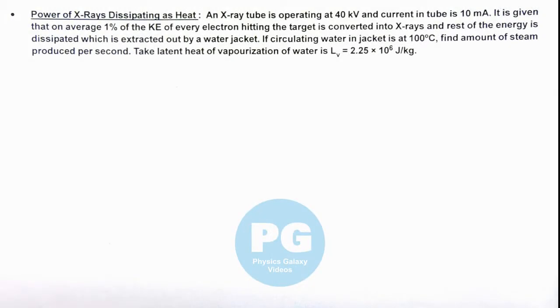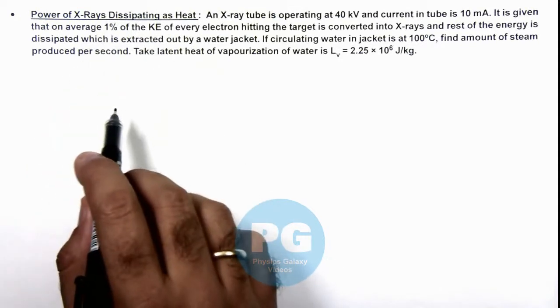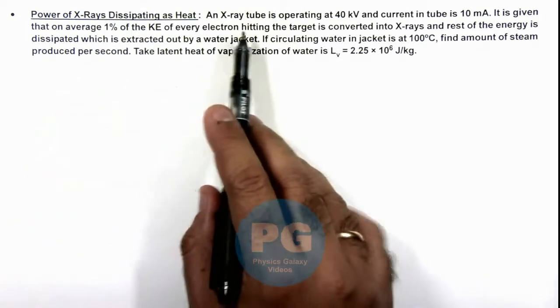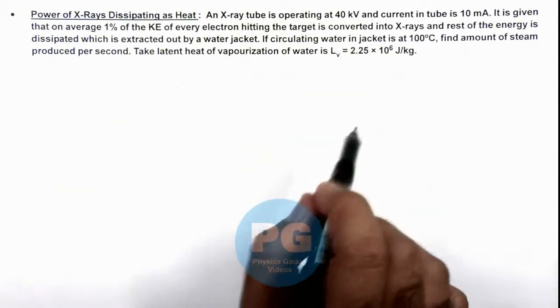In this illustration we'll study about the power of X-rays dissipating as heat. Here we are given that an X-ray tube is operating at 40 kilovolts and current in tube is 10 milliamperes.